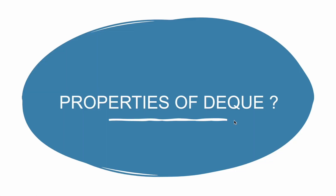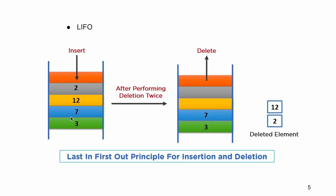Moving on to the properties of DQ. DQ can use the LIFO principle for inserting and removing elements. As we know, the LIFO principle is used by the stack data structure. According to this principle, the queue elements must be inserted from one end and should be removed from the same end. This property makes it clear that DQ can inherit all the properties of the stack data structure.